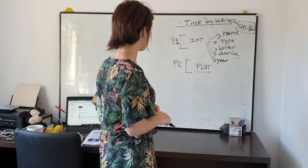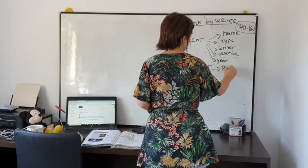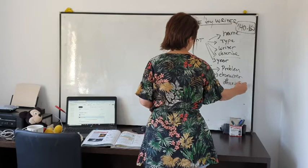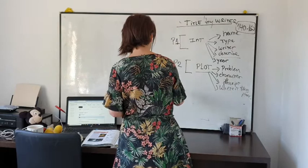In the plot paragraph you can write what the story is about, what the main problem is. You can also mention the characters and include a brief description of them, and maybe where the story takes place — and so on.